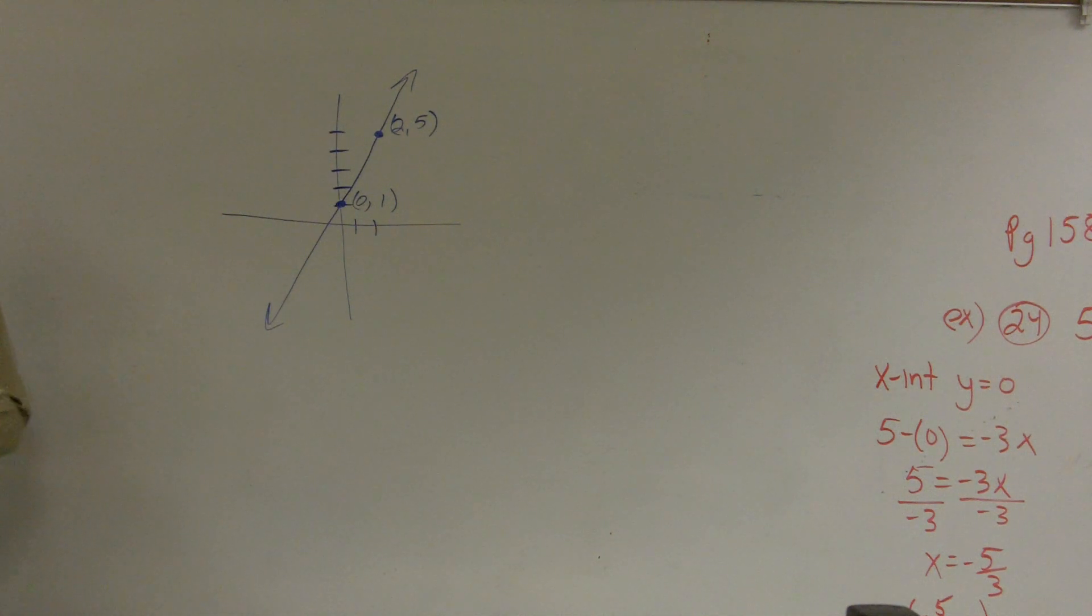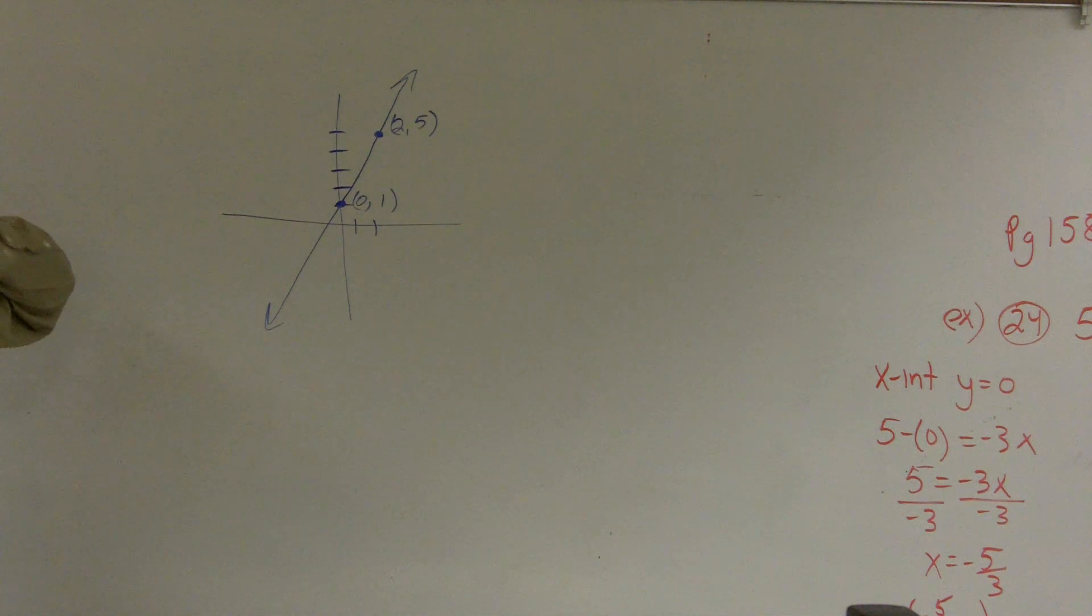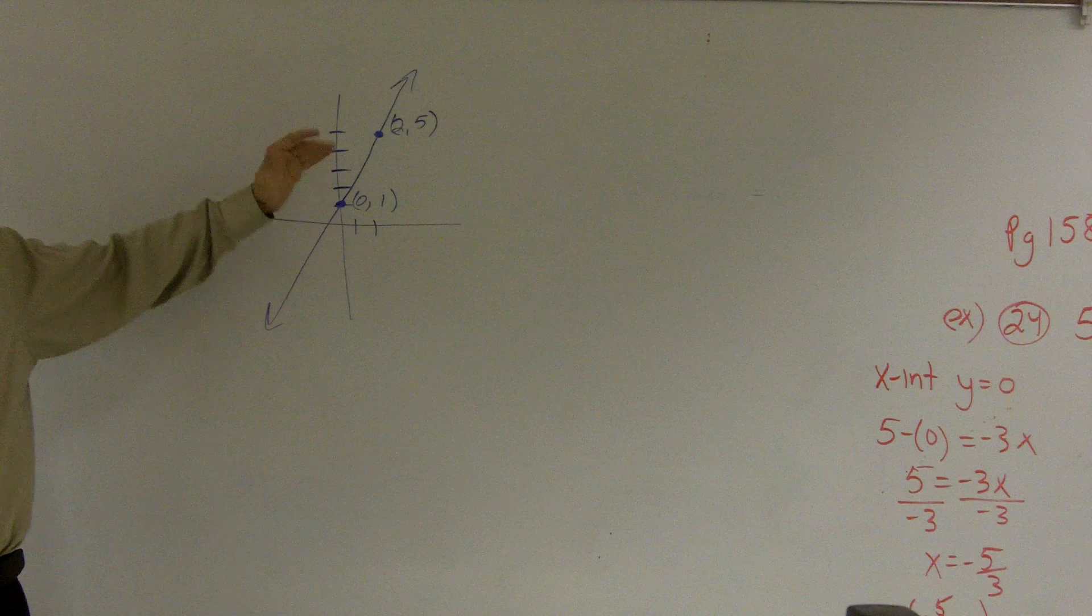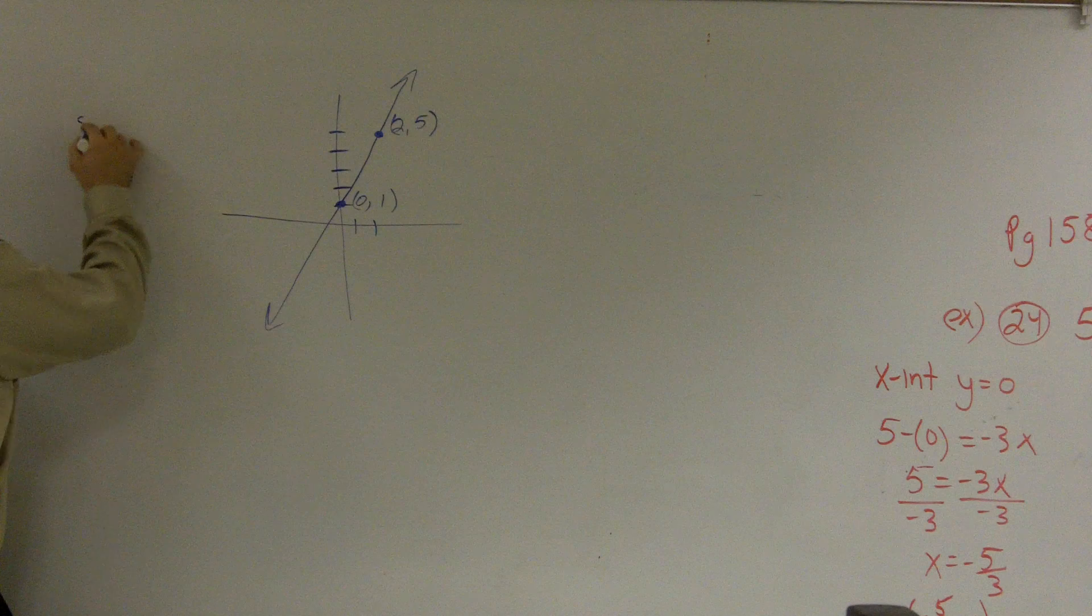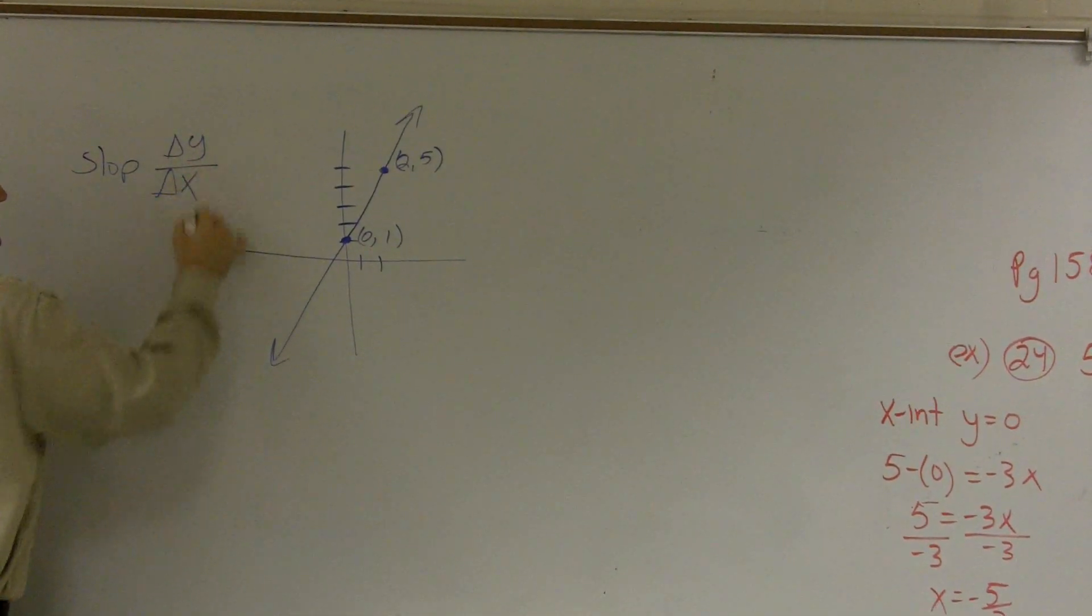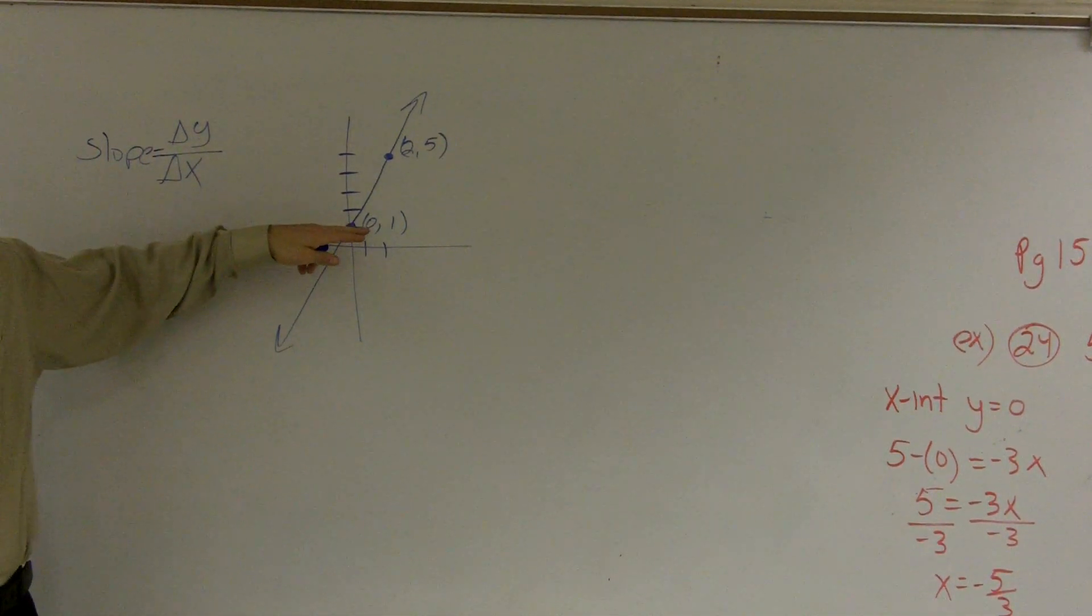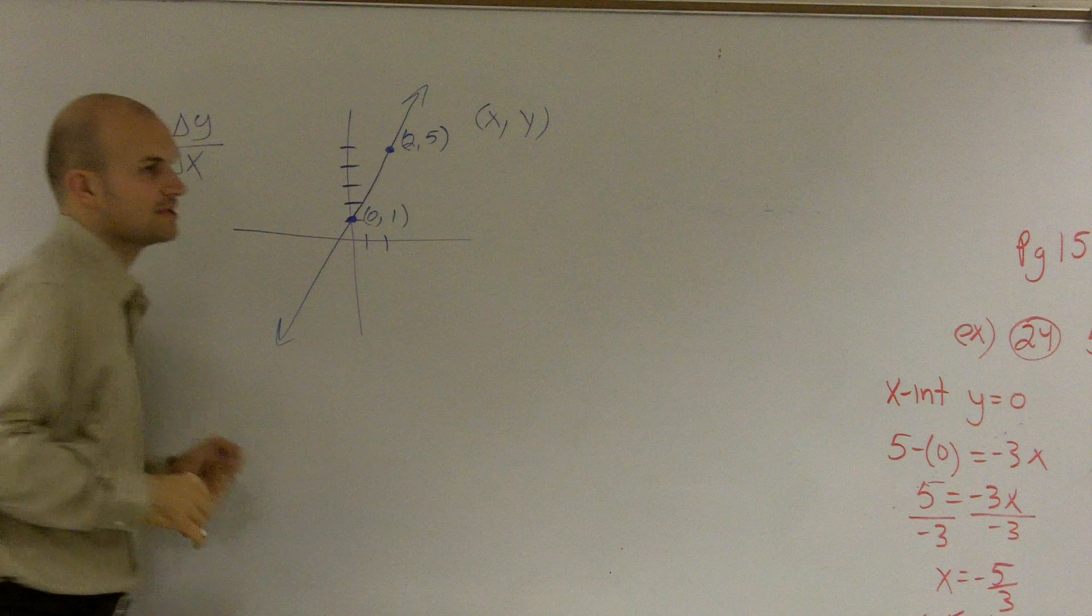I'm going to explain this problem for Catherine because she might have this exact same question. The student asked, if given these two points, does it matter how I find my slope triangles? Remember, slope is our change in our y coordinate over our change in our x coordinate. A coordinate point has an x and a y coordinate.